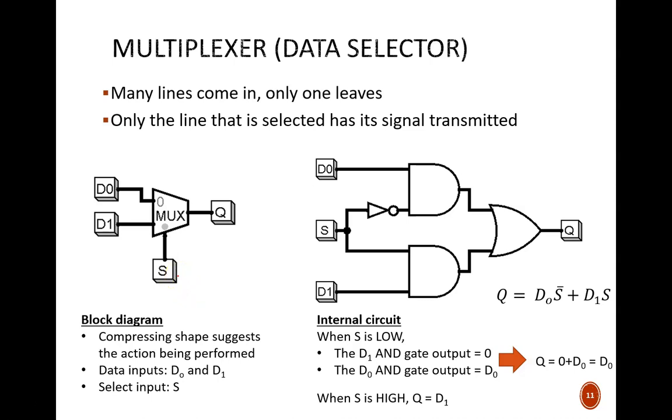S is short for select. If S equals 1, then D1 is selected. If S equals 0, then D0 is selected. How does this device accomplish this?